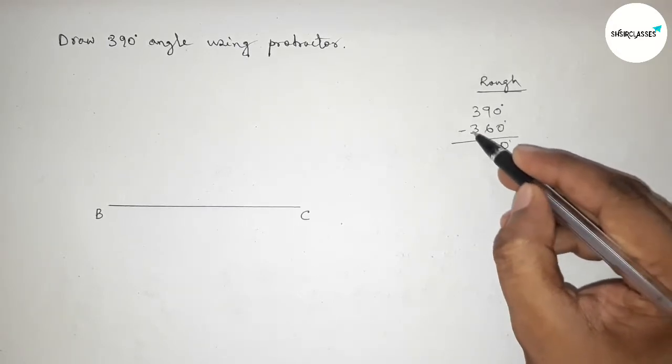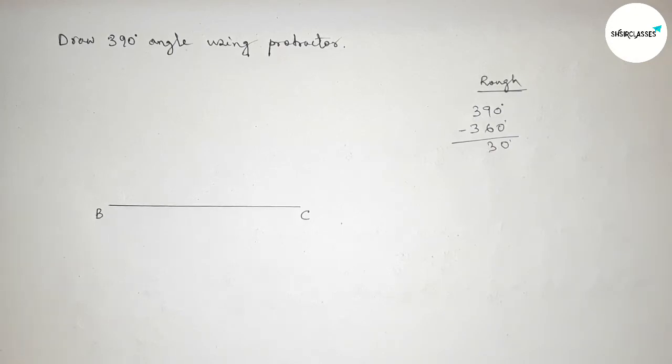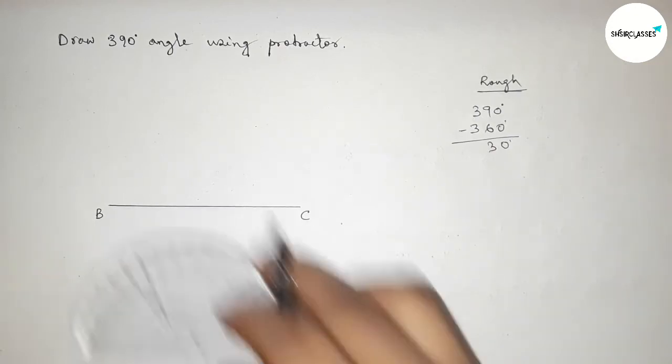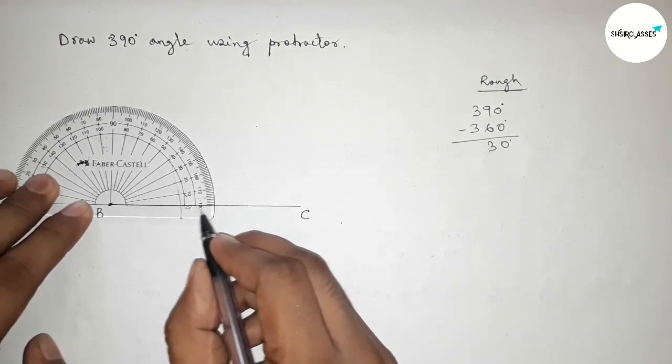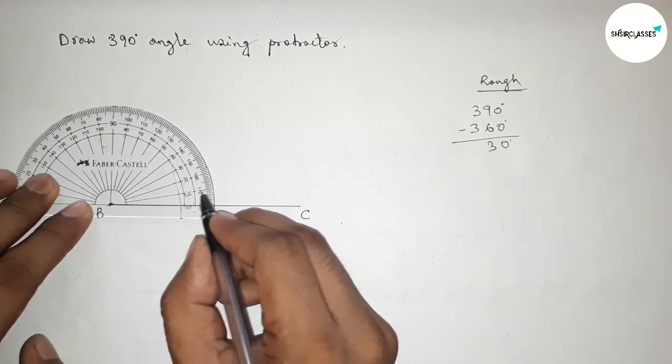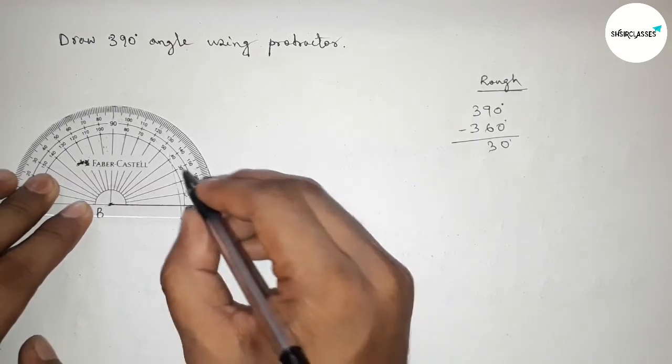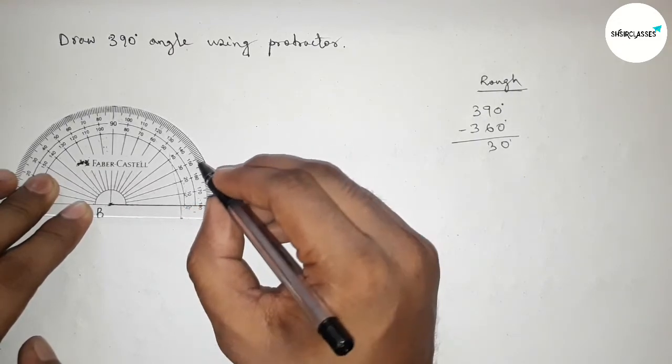So first we have to draw a 30-degree angle on the point B by using protractor. So this is starting 0, 10, 20, and this is 30-degree angle. So this line represents 30-degree angle, so first marking 30 degrees.